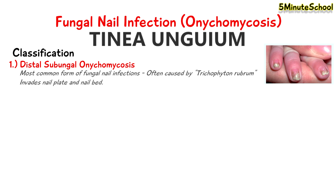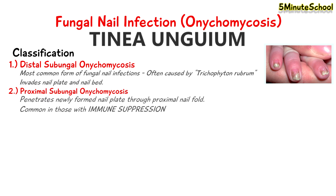Another type is called proximal subungual onychomycosis, which penetrates a newly formed nail plate through the proximal nail fold. This type of infection more commonly affects those with immune suppression.